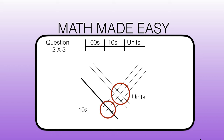So we have 1, 2, 3, 4, 5, 6 units — so we write 6 in the units box. We have 1, 2, 3 tens — so we write 3 in the tens box. We write 3 and 6, and 36 is the correct answer.